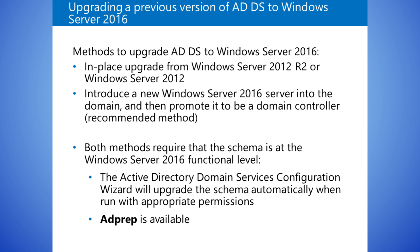For a clean installation of Windows Server as a domain member, perform these steps. 1. Deploy and configure a new installation of Windows Server, and then join it to the domain. 2. Use Server Manager to add the Active Directory Domain Services role. 3. Promote the new server to be a domain controller in the domain by using the Active Directory Domain Services configuration wizard.